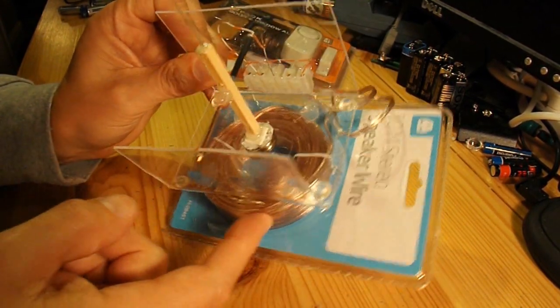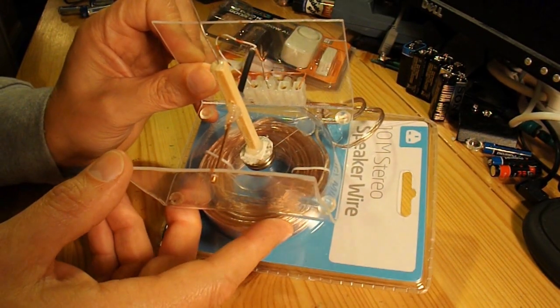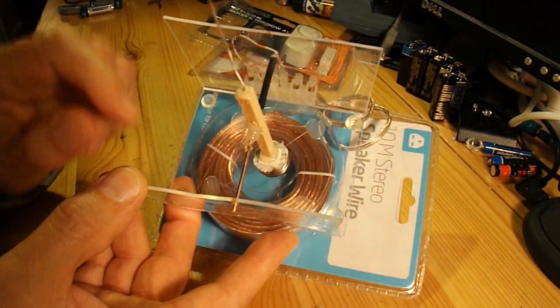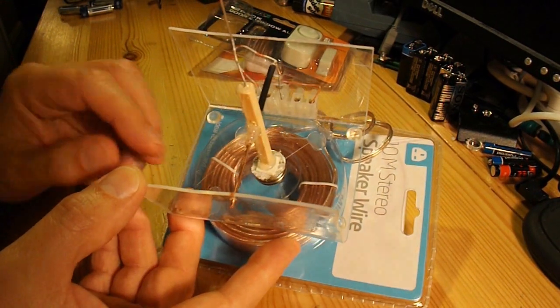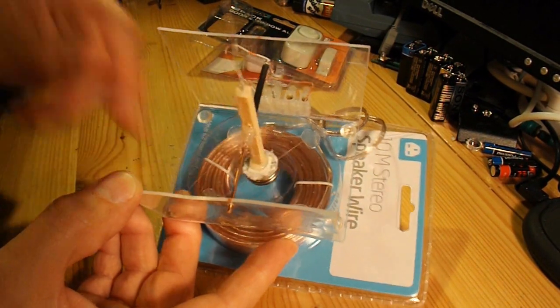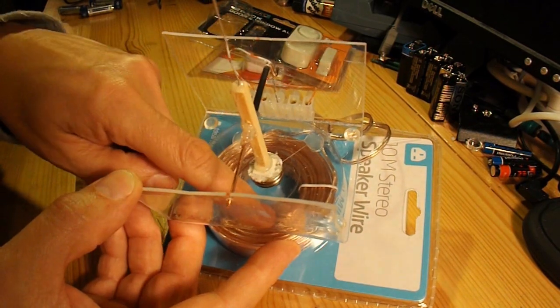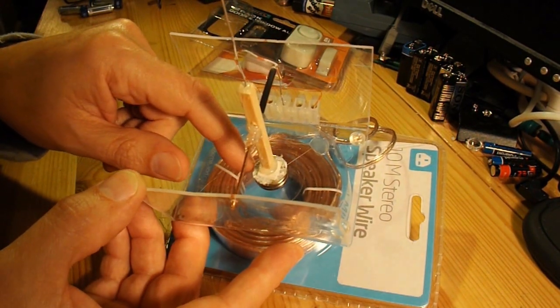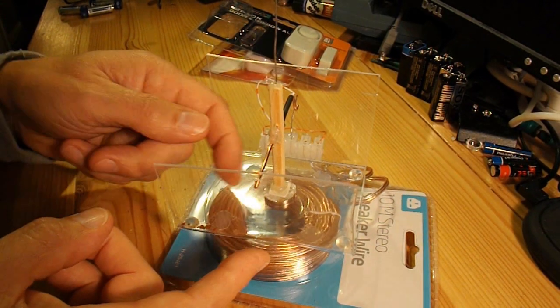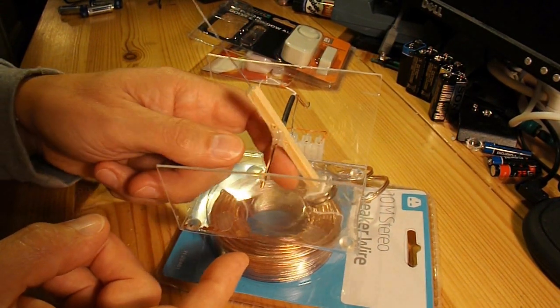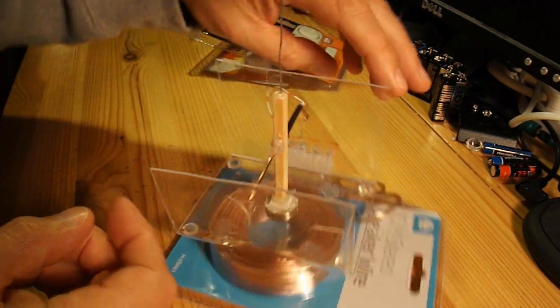Very simply, we've got a big coil underneath. When the power goes through it, it becomes magnetic. It repels this magnet on the bottom here. And as the magnet moves away, the circuit is broken, the coil collapses, the magnet falls back again, the circuit is closed again, repels the magnet, so it basically oscillates.